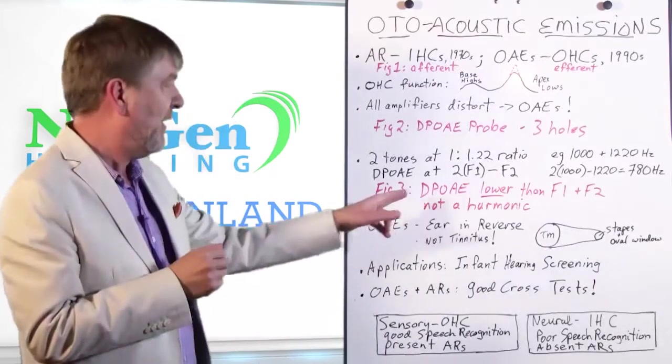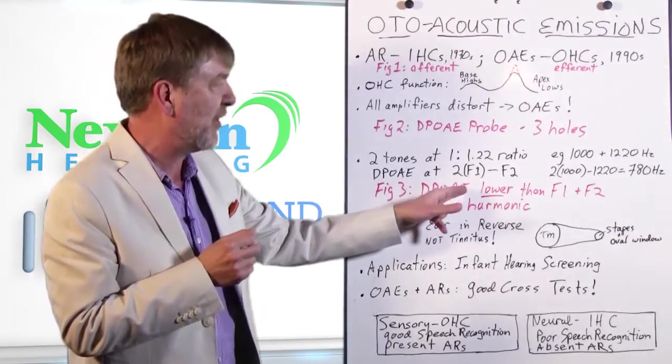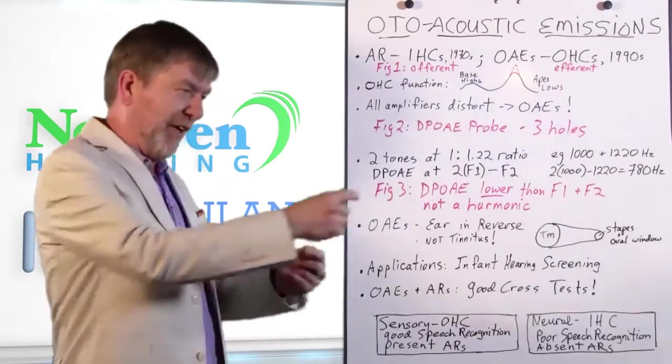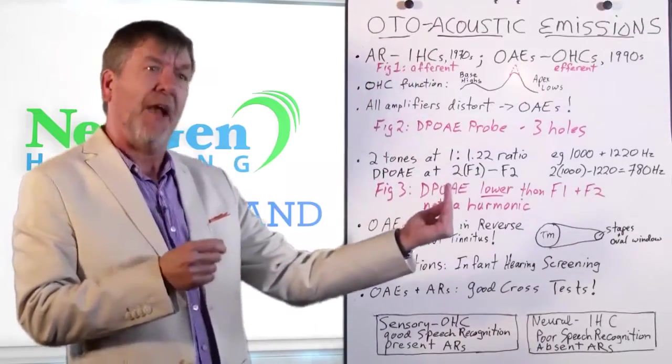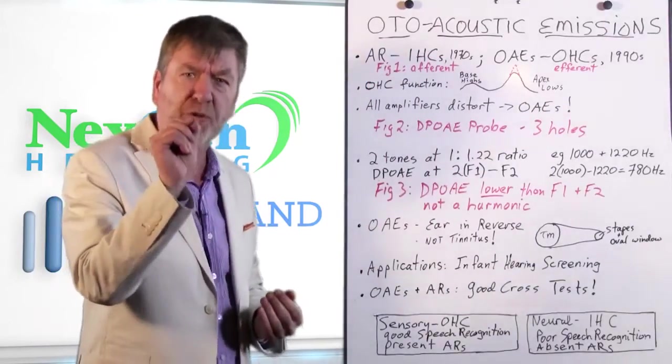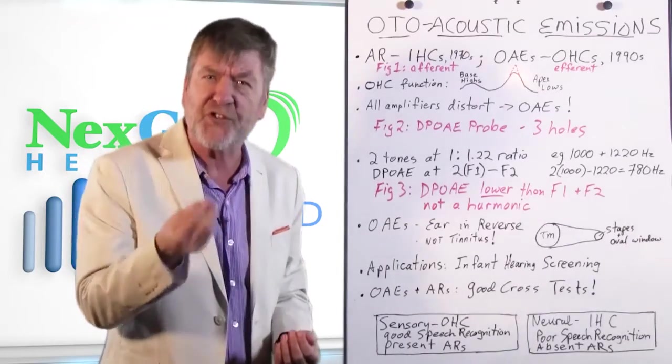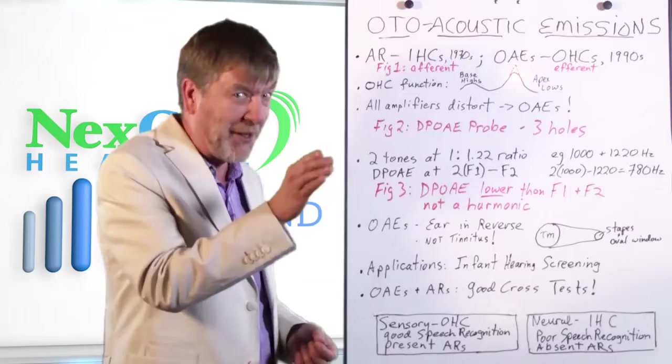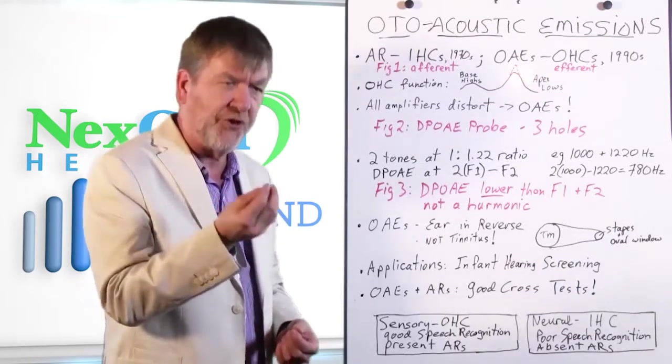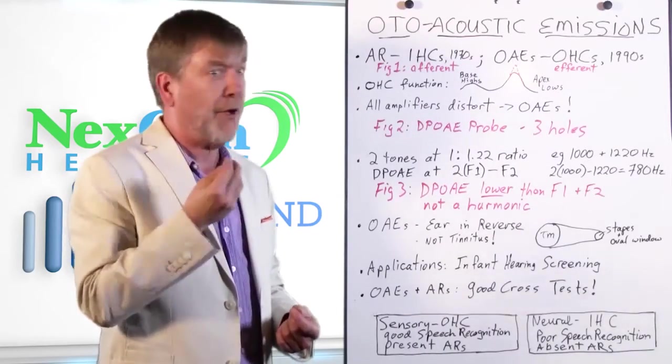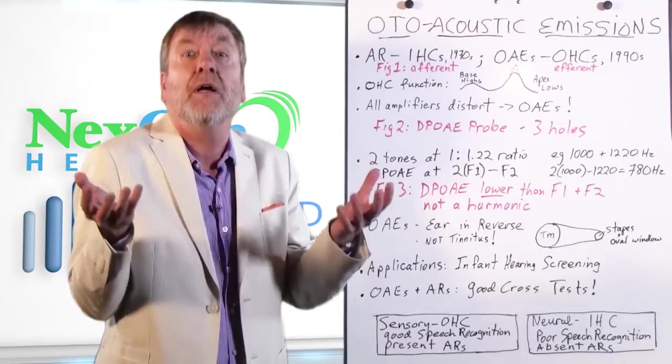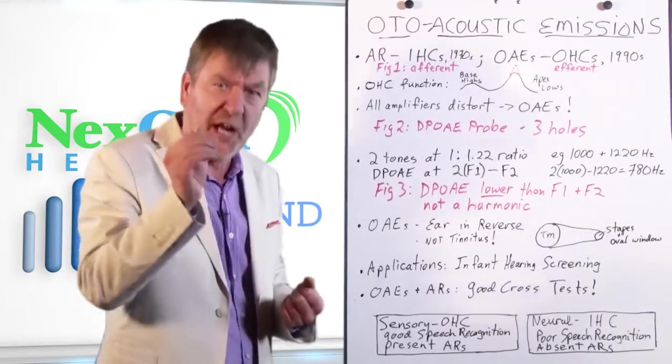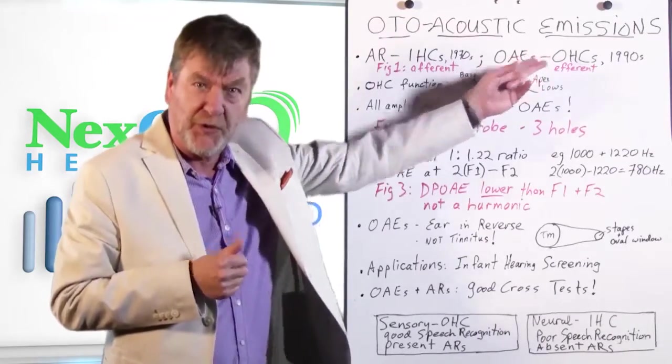So figure 3 shows you, then, how the distortion product, otoacoustic emission, is actually lower than frequency 1 and frequency 2. You can see on this figure that you'll have a frequency of F1 and a frequency of F2. And then lower in frequency is the distortion product otoacoustic emission. And I stress the word lower so that people won't think, oh, maybe that emission is just a harmonic of the two tones. Uh-uh-uh. It's not a harmonic. It's an intermodulation type of distortion. And it's unique to the cochlea, but not all that unique in the fact that the cochlea is an amplifier. And all amplifiers distort. And that distortion is done because of the amplification properties of the outer hair cells, not the inners.